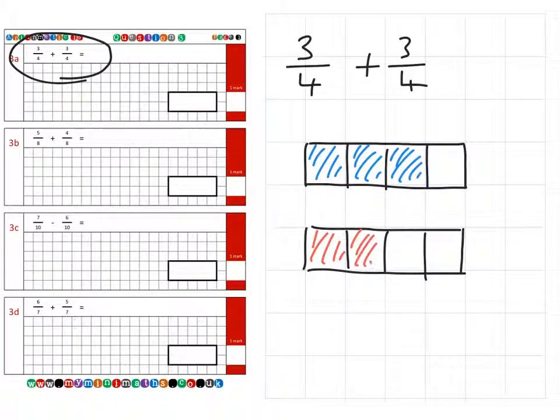So there's my first, second, third 3 quarters. When I put them together, I finish up with 6 quarters altogether. Or we could also say 1 and 2 quarters, or 1 and a half.